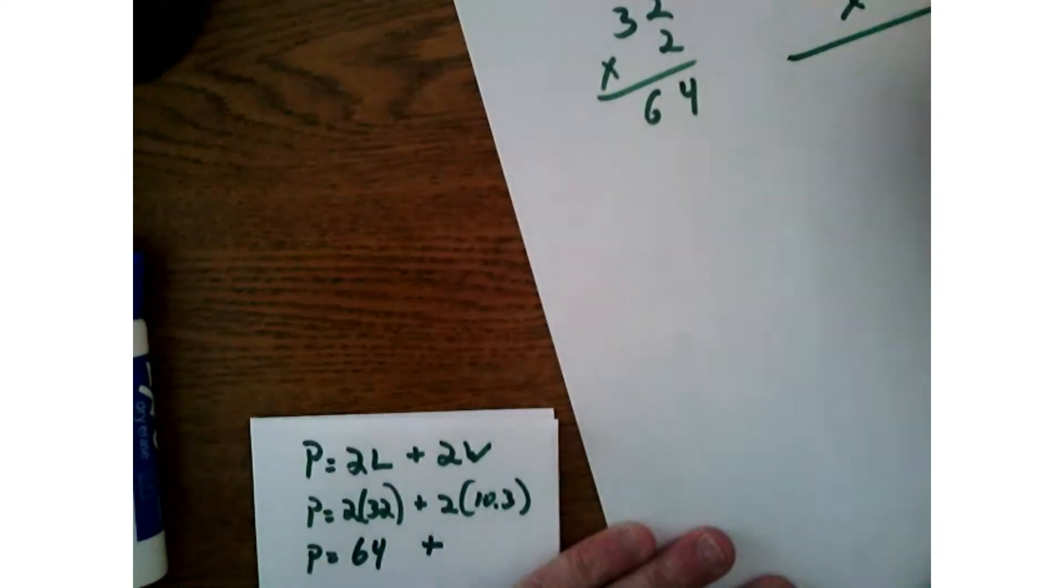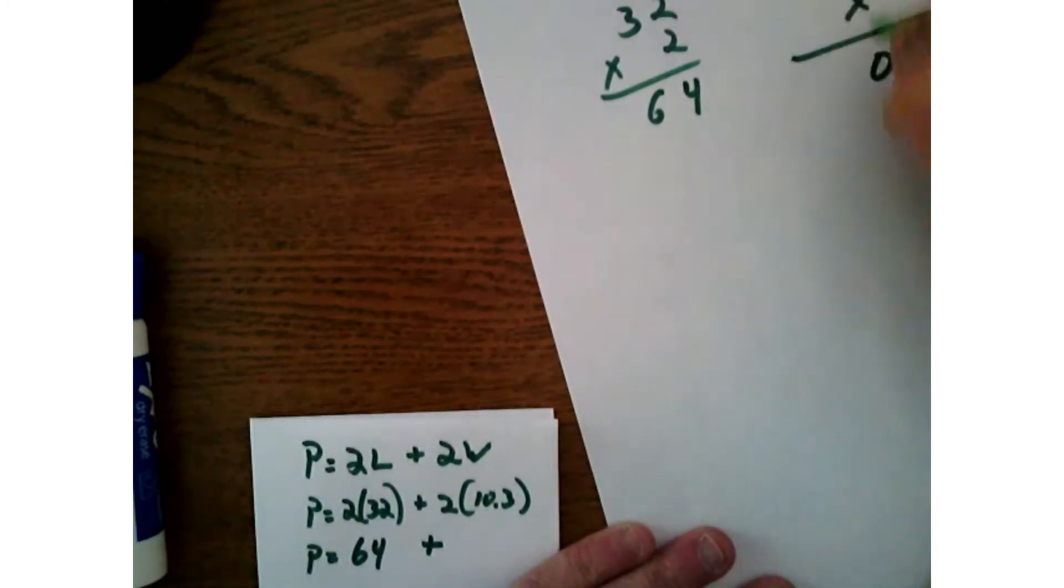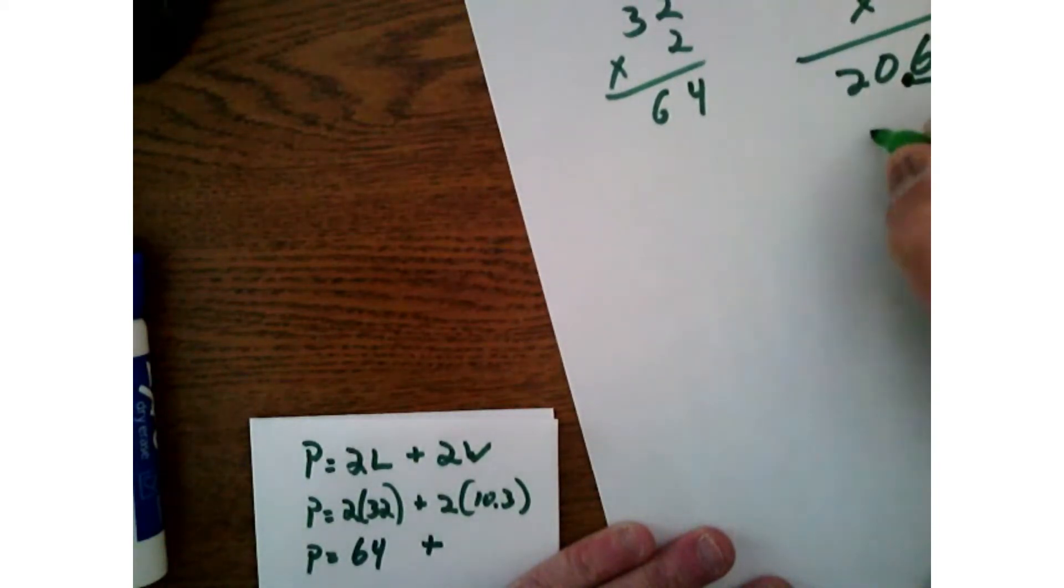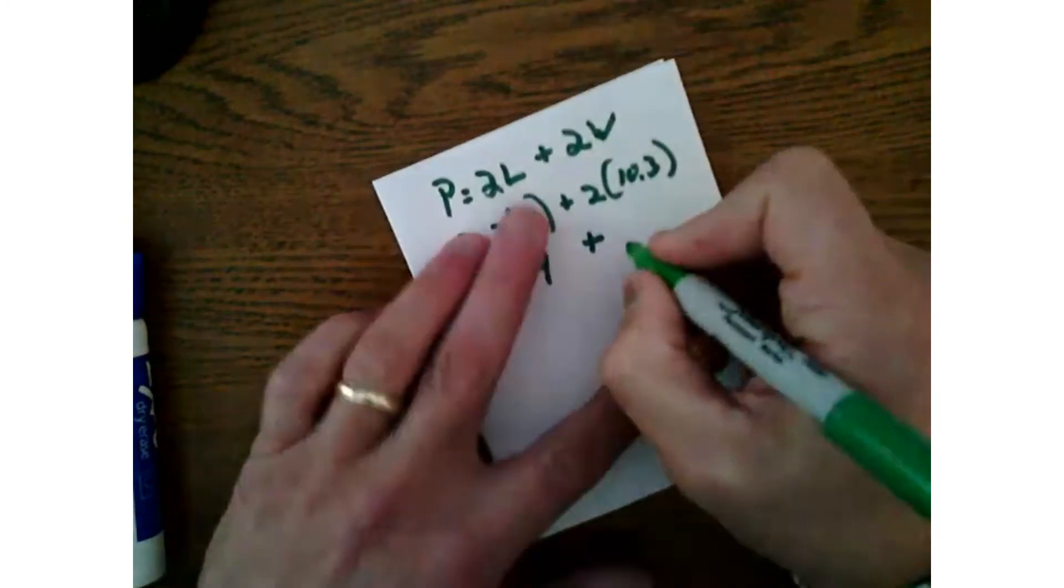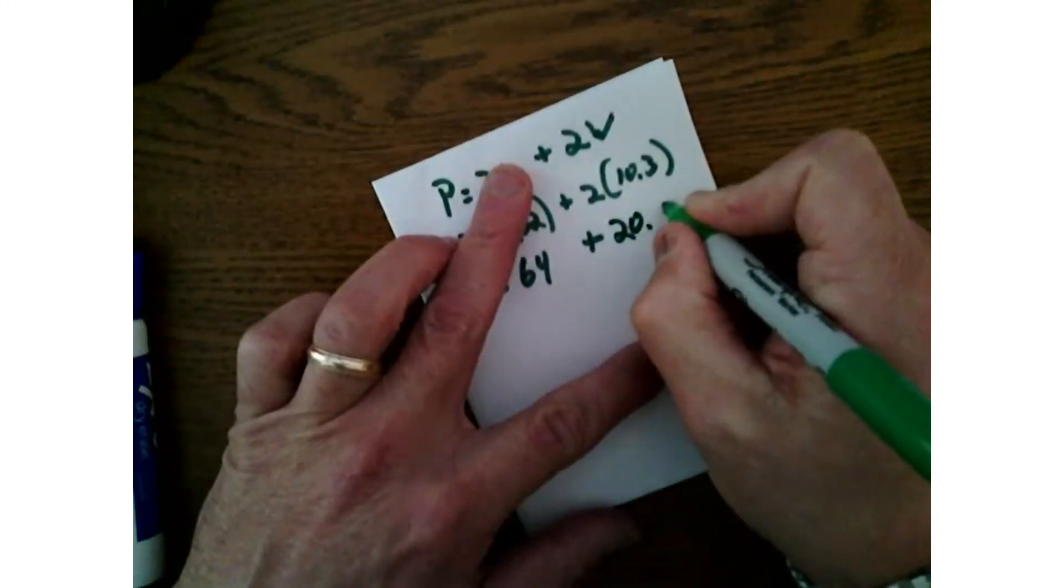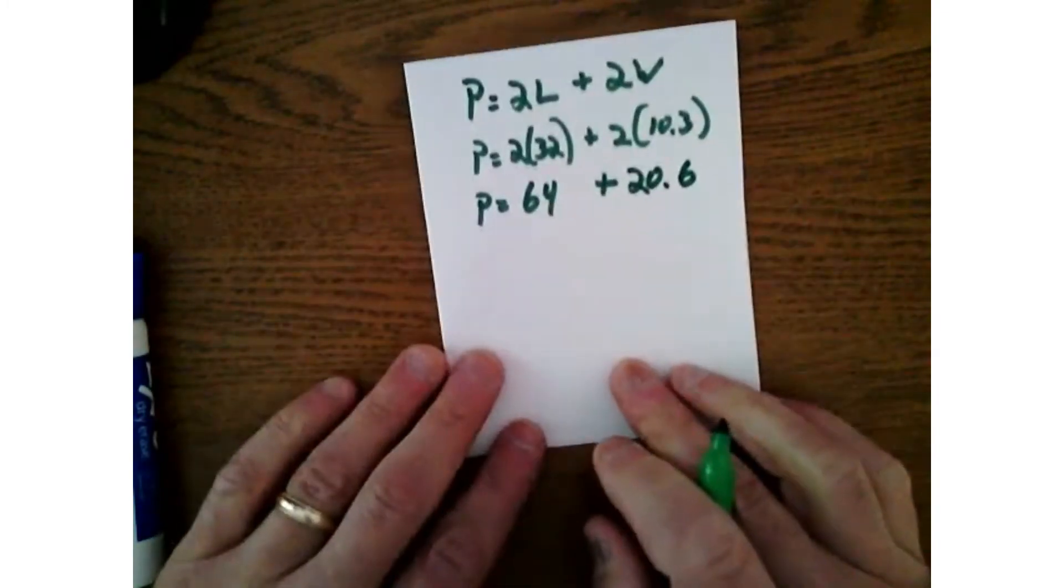64 plus, and then two times 10.3, so 10.3 times two. This won't be so hard either. Two times three is six, that's a zero, that's a two, one power of 10, one power of 10, 20 and six tenths. That wasn't too hard.